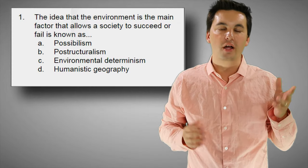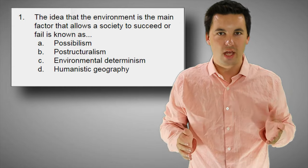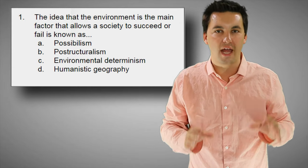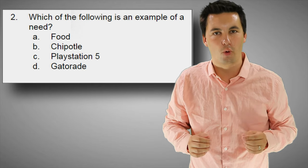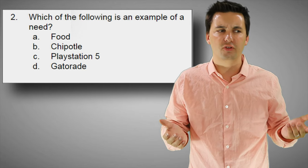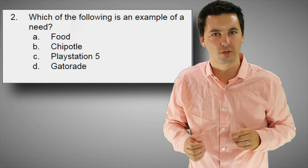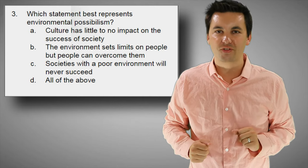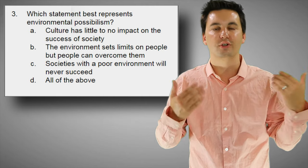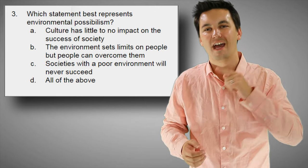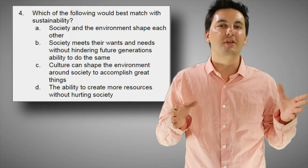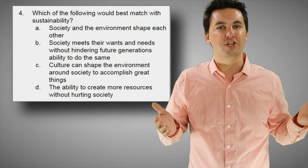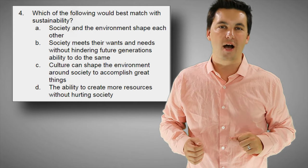Both these theories are really just dealing with relationships — looking at people, looking at the environment, and trying to understand how they work together and influence each other. That was our quick summary of Unit 1, Topic 5. Make sure you join me next time for 1.6, scale of analysis — a concept that a lot of students get tripped up on. Subscribe to the channel so you get notified when the next video comes out. I'm Mr. Sin, thank you so much for watching, and as always, geographers, I'll see you next time.